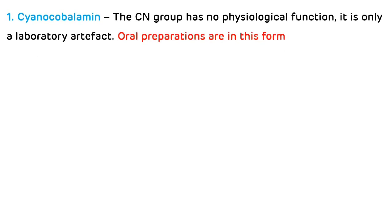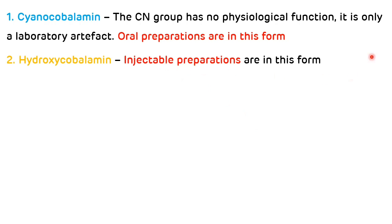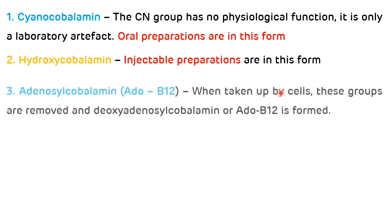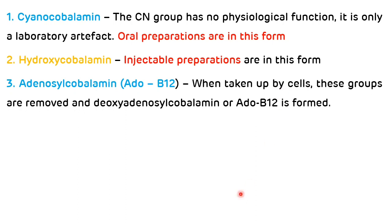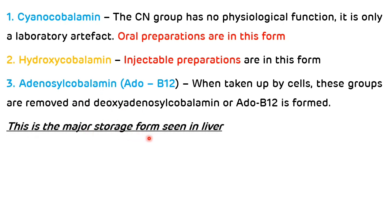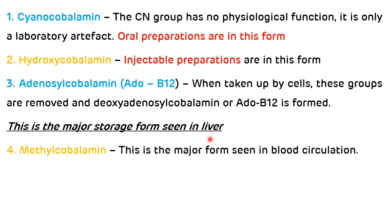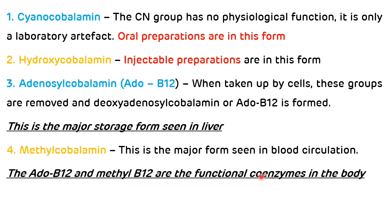Now the various forms of vitamin B12. The first form is cyanocobalamin — the cyanide group has no physiological function and it is only a laboratory artifact; oral preparations are in this form. Second form is hydroxycobalamin — injectable preparations are in this form. Third and important form is adenosylcobalamin; when taken up by cells, deoxyadenosylcobalamin is formed, which is the major storage form seen in the liver. Fourth important form is methylcobalamin, which is the major form seen in blood circulation. Adenosyl B12 and methyl B12 are the functional coenzymes present in the body.